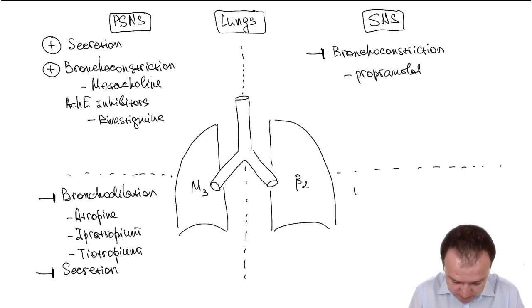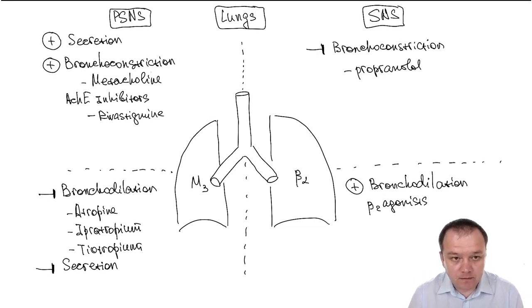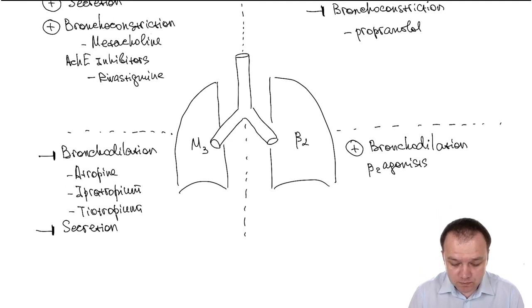And stimulation of beta-2 adrenergic receptors causes bronchodilation. Stimulation with beta-2 agonists. These drugs are very useful for control and prevention of bronchial asthma attacks. What kind of medications?